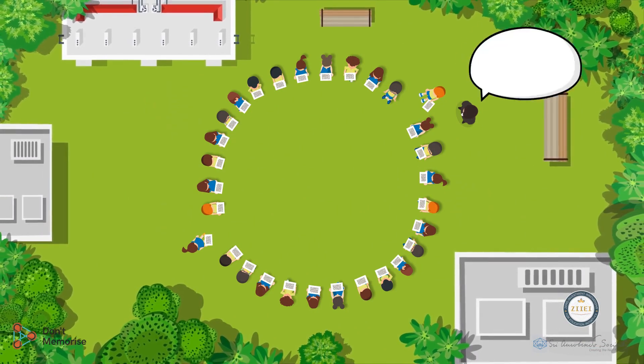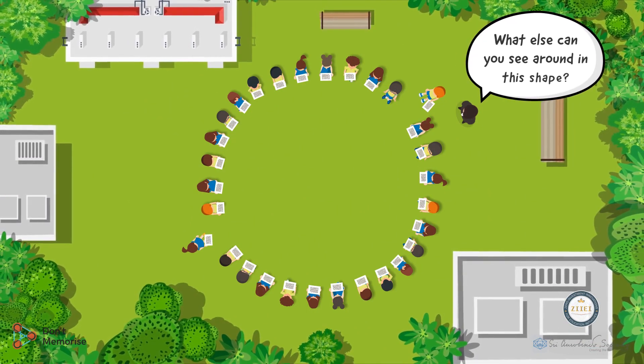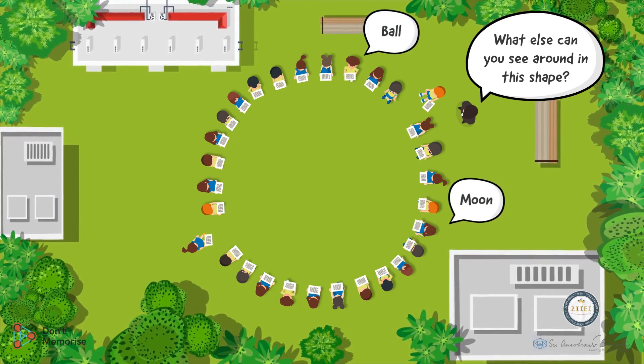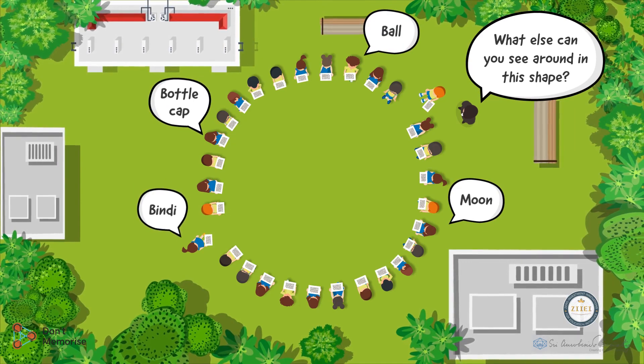Further, we shall ask them, what else can they see around in this shape? The students may respond by saying, ball, moon, bottle cap, bindi and so on.